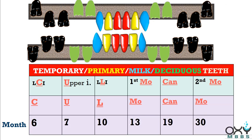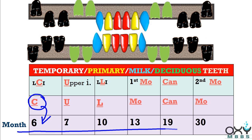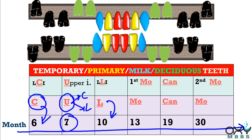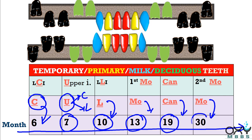So lower central incisors appear at around 6 months of age. Remember all these are in months. Upper incisors — upper central plus upper lateral incisors both — appear at around 7 months of age. Lower lateral incisors appear at around 10 months of age. First molars at 13 months of age. Canines at 19 months of age. Second molars at around 30 months of age.